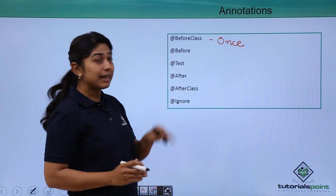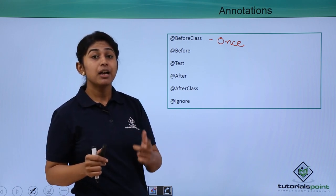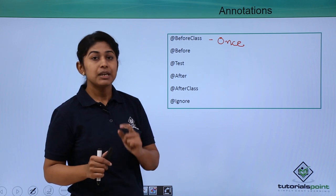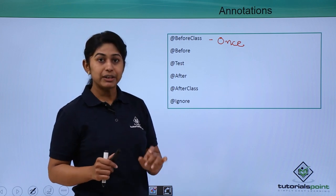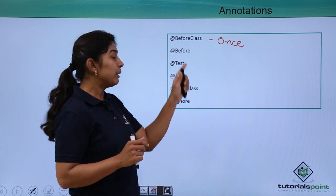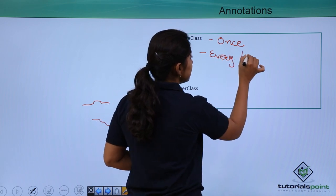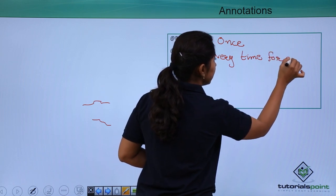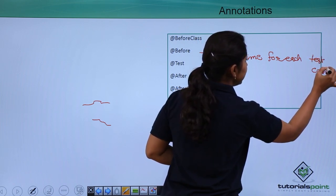The second annotation is @Before. Whenever you want to initialize any object for the time the method is being used, the @Before annotation will be used. It means if you are having five test cases, the @Before method will be called before each test case, for five times. So it will be invoked every time the test case is being executed — it will be invoked for every test case.